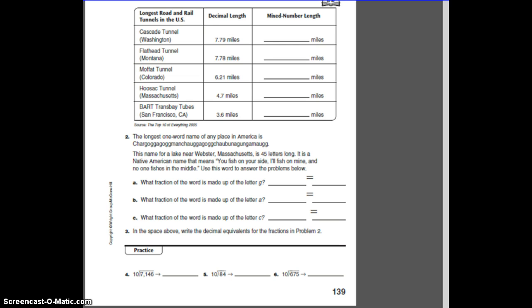So the first ones, I think they're kind of easy. You take that whole number, 7, and then 79, as you would read it, you would read it as 79 hundredths. So just write it that way, 79 over 100.